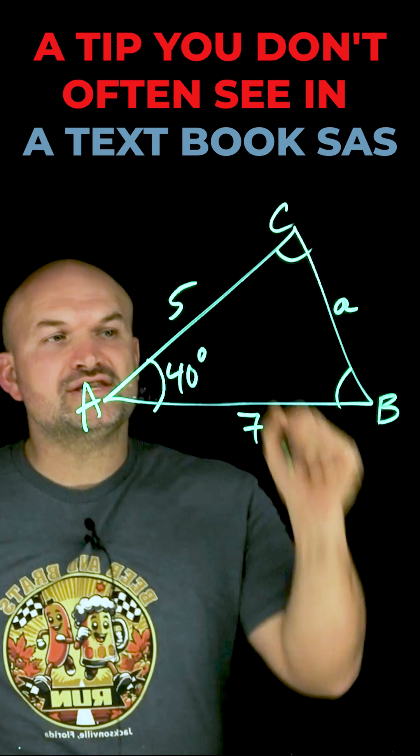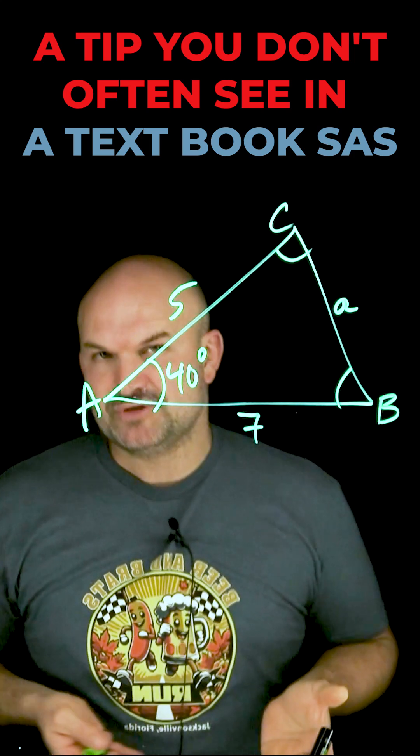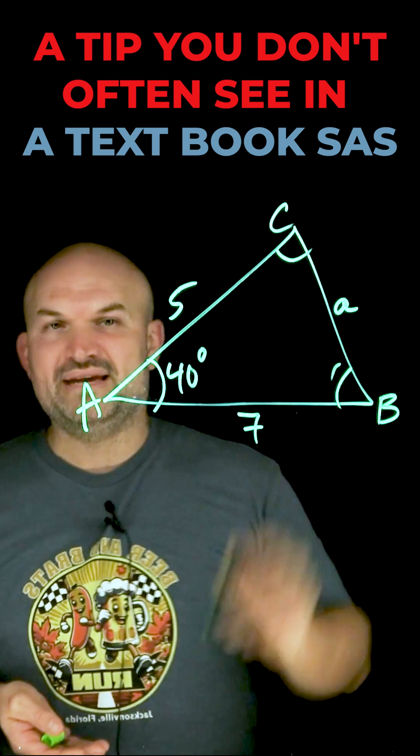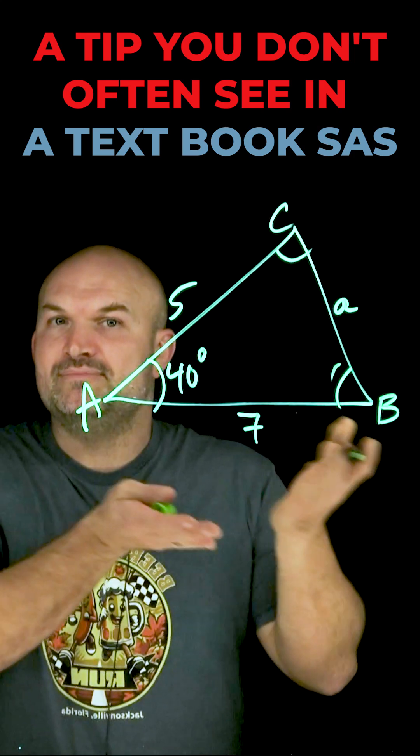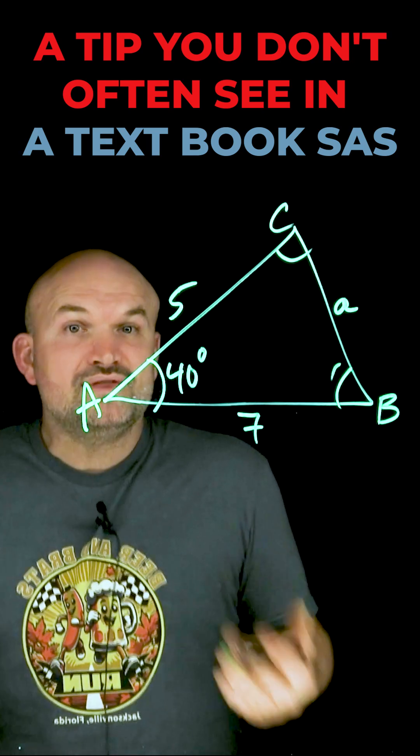And the answer is always use the smaller of the two angles. The reason being is the ambiguous case gives us the option that our angle B could either be acute or it could be obtuse. But if it's obtuse, we know that from triangles, there's only one obtuse angle.